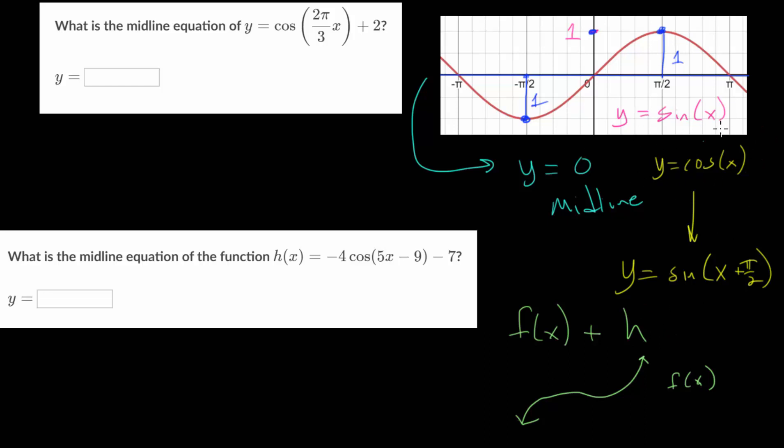So if we take this y equals cosine x, and we add 4, then the midline of this function would be at y equals 4. It just shifts the midline up 4 units. Likewise, if we take, let's say, y equals the sine of x and we subtract 2,